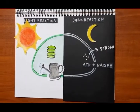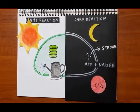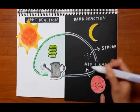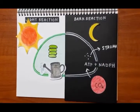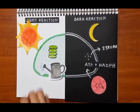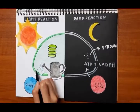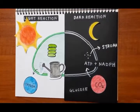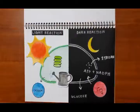Water is used in the light reaction, while carbon dioxide is needed in the dark reaction. By the end of the process, the light reaction produces oxygen, and the dark reaction produces glucose.